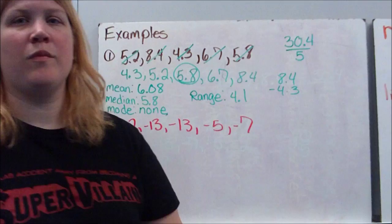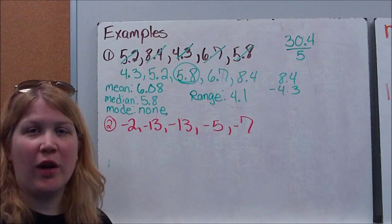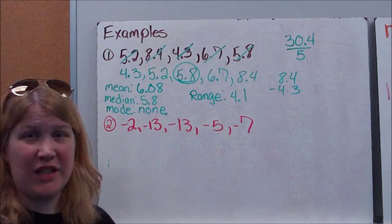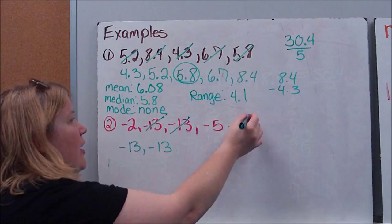All right, we'll take a look at our next example. The first thing I notice is these are negative numbers, so remember you need to flip your thinking when you're ordering from least to greatest. It kind of works in the opposite order than our other ones would, so the larger the digits, the smaller the number is. So my smallest two numbers are negative 13 and negative 13. We do need to list them both, so make sure we list them both. Then a negative 7, then a negative 5. Finally, a negative 2.